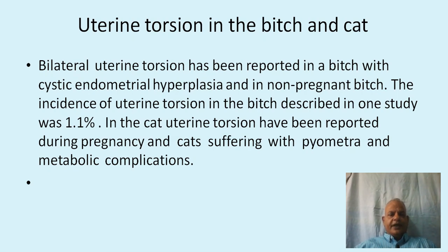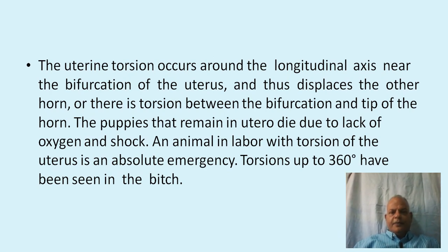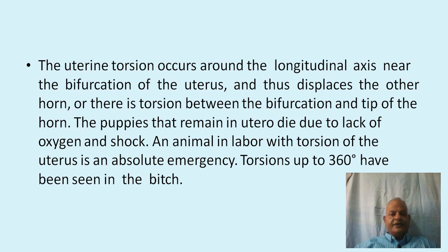Uterine torsion in the bitch and cat: bilateral uterine torsion has been reported in the bitch with cystic endometrial hyperplasia and in non-pregnant bitches. The incidence in one study was 1.1%. In the cat, uterine torsion has been reported during pregnancy and in cats with pyometra and metabolic complications. Torsion occurs around the longitudinal axis near the bifurcation of the uterus, and puppies remaining in utero die due to lack of oxygen and shock.